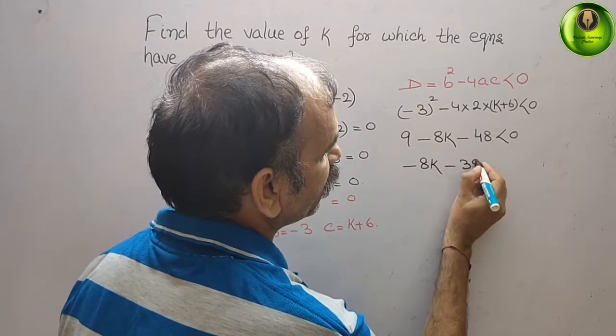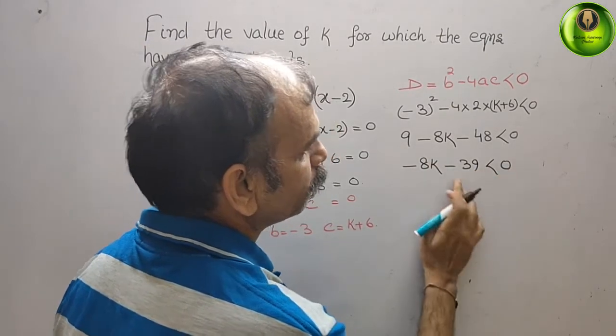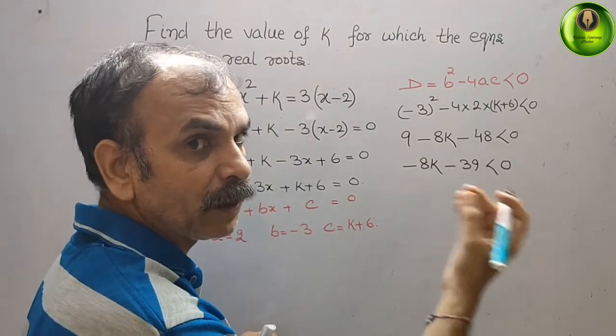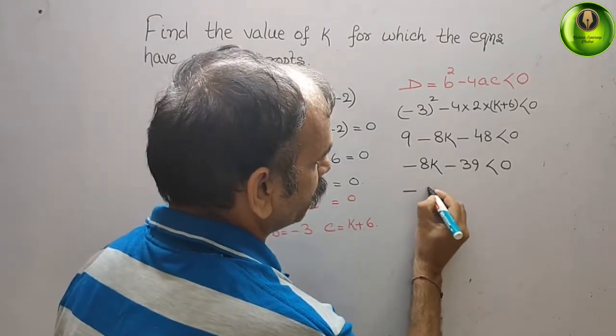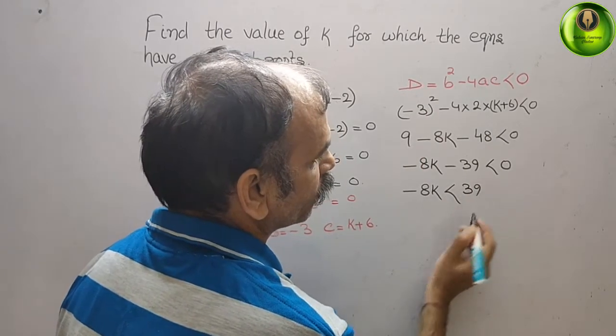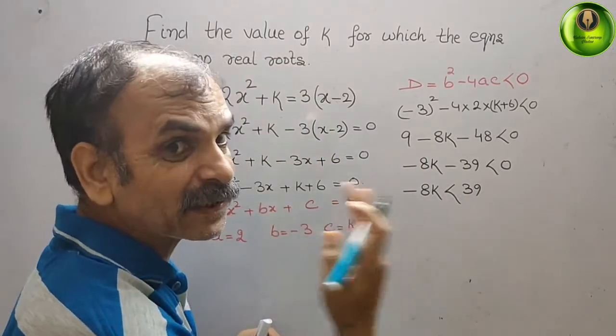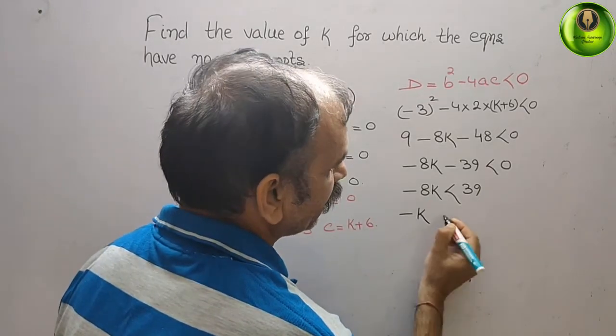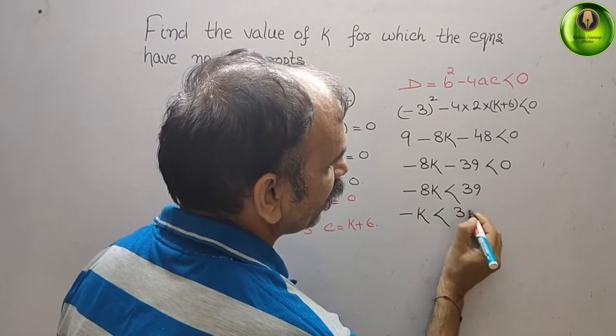Bring -39 to the right side, it becomes +39. So -8k < 39, which means -k < 39/8.